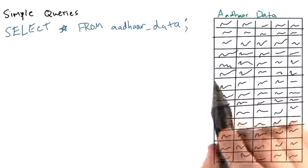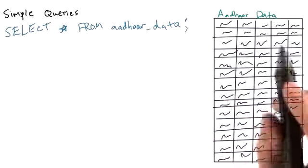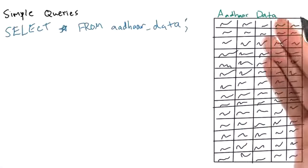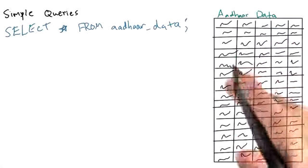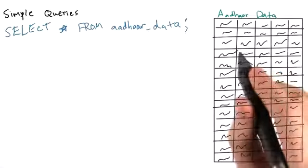How could we query the Aadhaar enrollment data set with SQL-like syntax if our data was in a database stored in a table called aadhaar_data? Well, the most simple thing that we might want to do is simply to select all of the data, that is, all rows and columns.